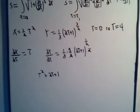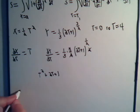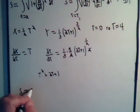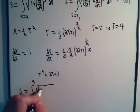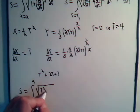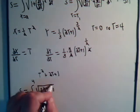So let's write our integral: S equals the integral from t equals 0 to t equals 4 of the square root of t² plus 2t plus 1, times dt.